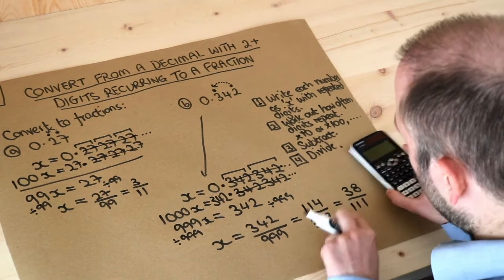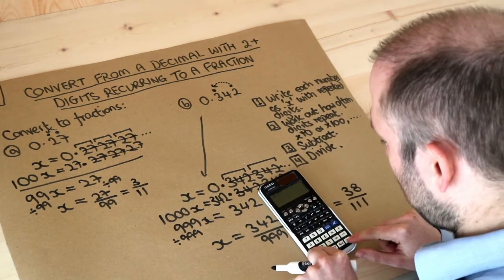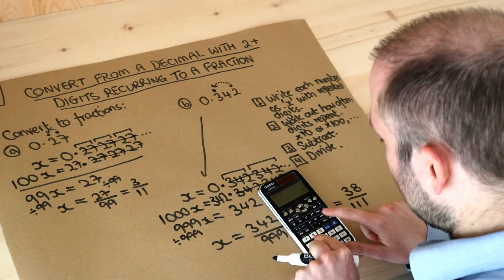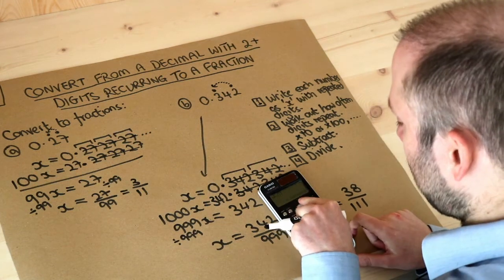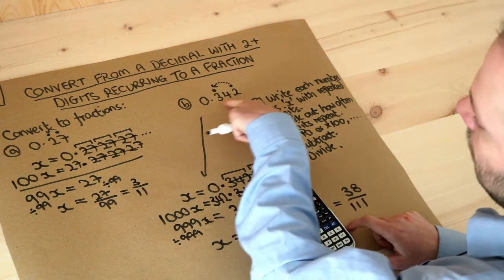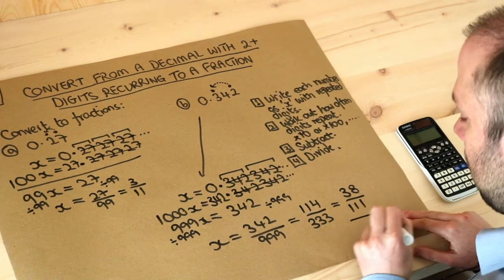So let's check the answer: 38 over 111, and I press the SD key, I get 0.342 342 342. That's great because that's what that number is, so that's our final answer.